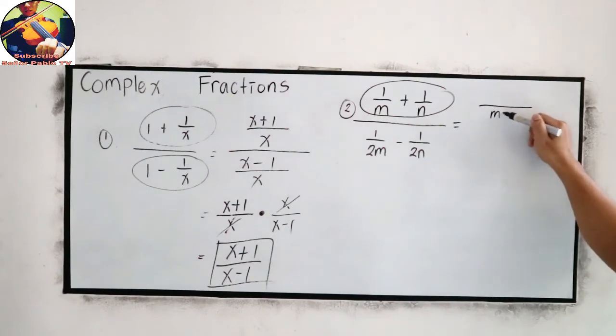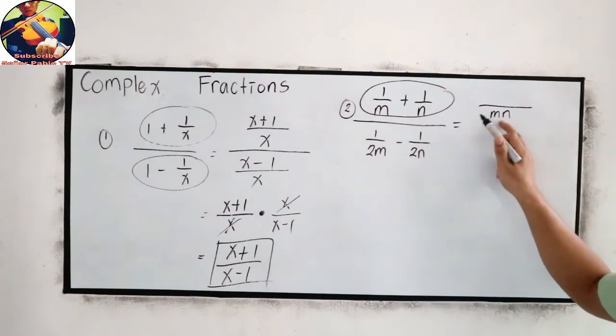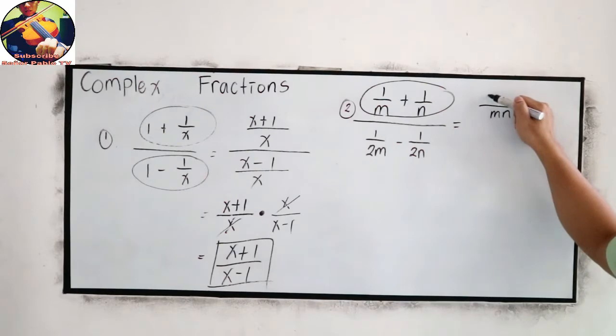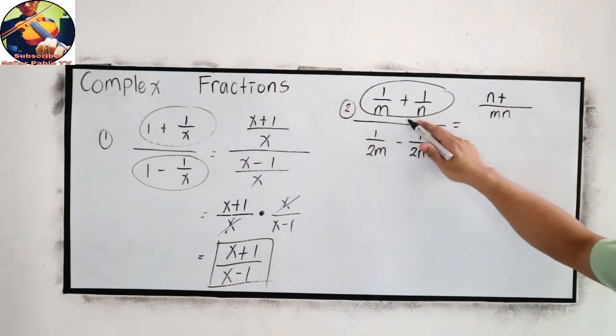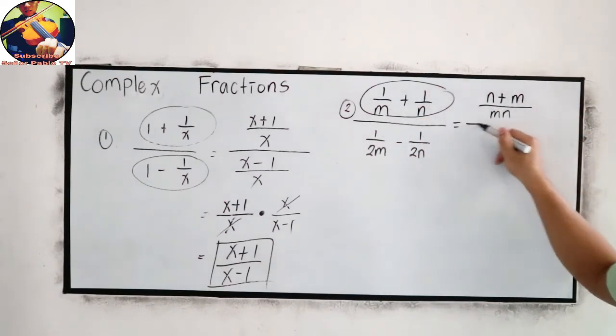we have MN. MN. MN divided by m, that is n, n times 1, so n. Plus, MN divided by n, that is m times 1, which is m. All over.